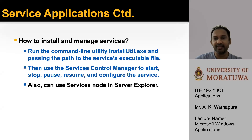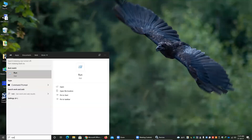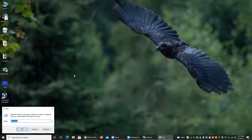How to install and manage services: run the command-line utility installutil.exe, passing the path to the service's executable file. Then use the Services Control Manager to start, stop, pause, resume, and configure the service. You can also use Services in Server Explorer. Let's see how to manage services on your computer — go to Start and type 'run', open Run, and type services.msc, then press OK.